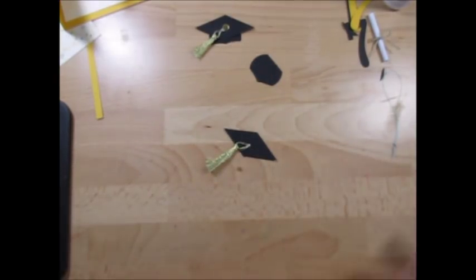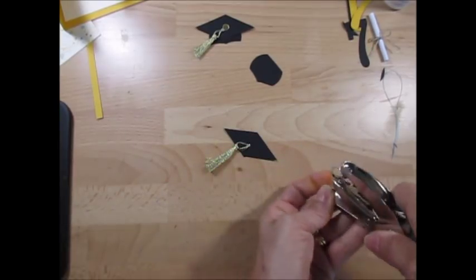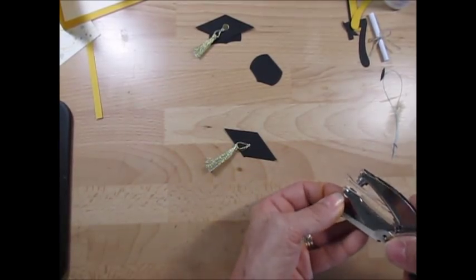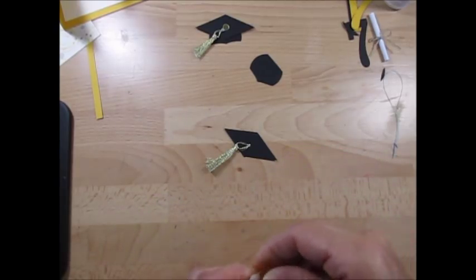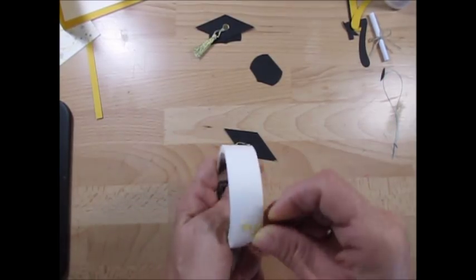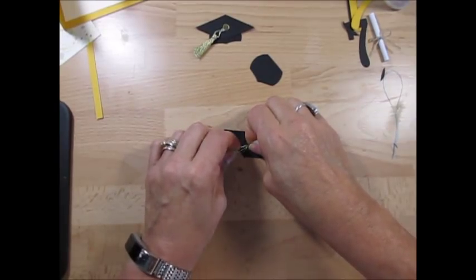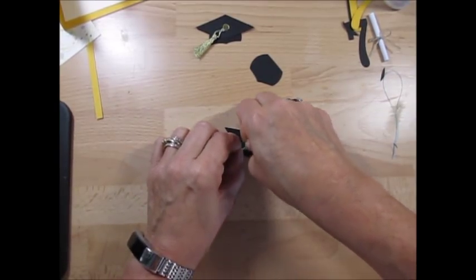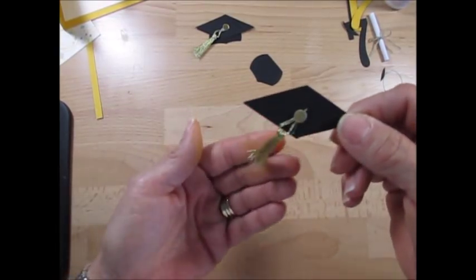So now what to do with that. I use a regular old punch and I punch out a piece of gold foil. Now I just use a glue dot and put that at the top. Voila my friend. So now I get my tassel.